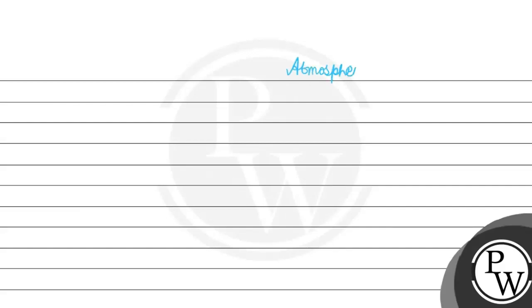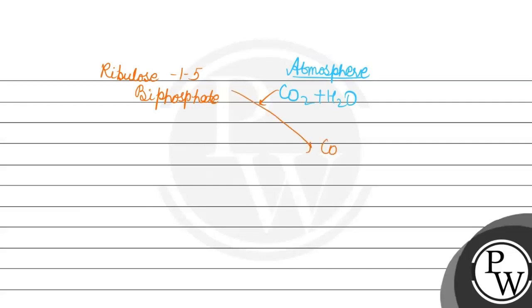Dark reaction में तीन steps होते हैं: carboxylation, reduction, और regeneration। Starting में atmospheric CO2 और H2O enter होते हैं, और ribulose-1,5-bisphosphate (RuBP) का carboxylation होता है। जब RuBP का carboxylation होता है, तो 3-phosphoglycerate बनता है — इसके 2 molecules बनते हैं।